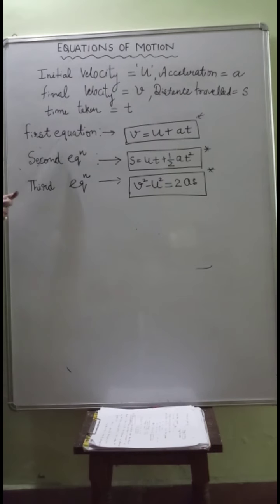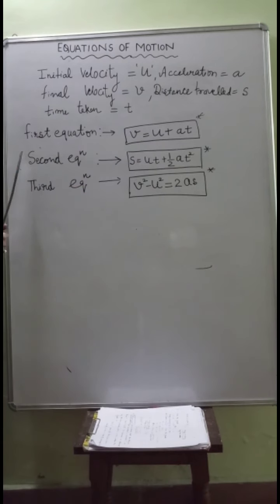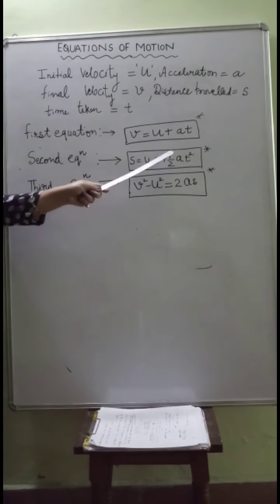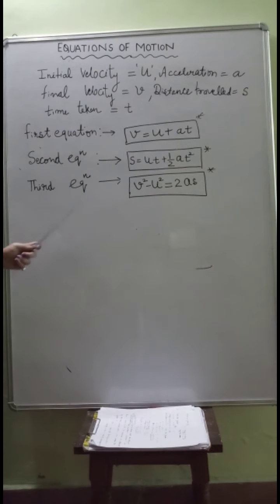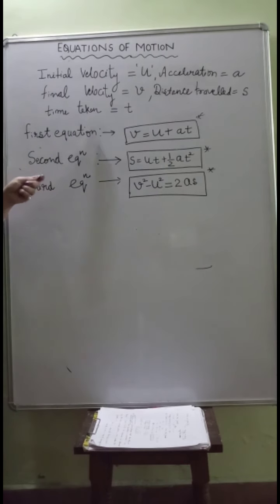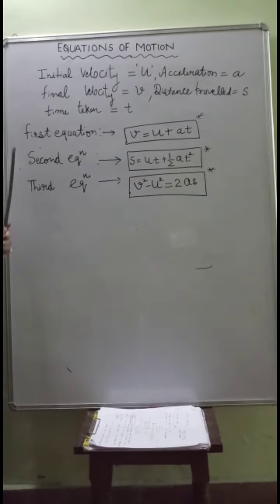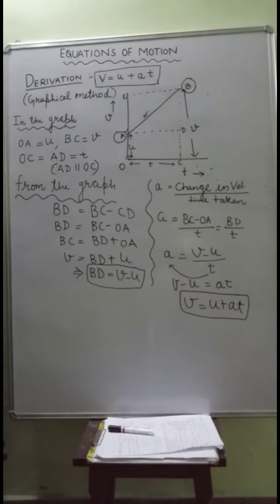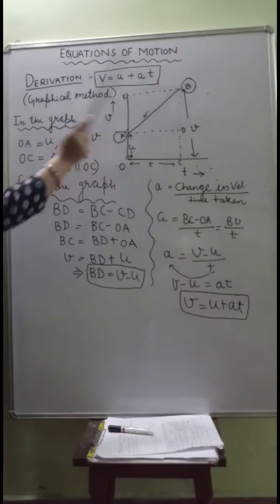The first equation of motion is v = u + at. The second equation of motion is s = ut + ½at². The third equation is v² - u² = 2as. You are not going to change the sequence — this is the first equation, this is the second, and this is the third. Starting the derivation with the first equation, v = u + at.